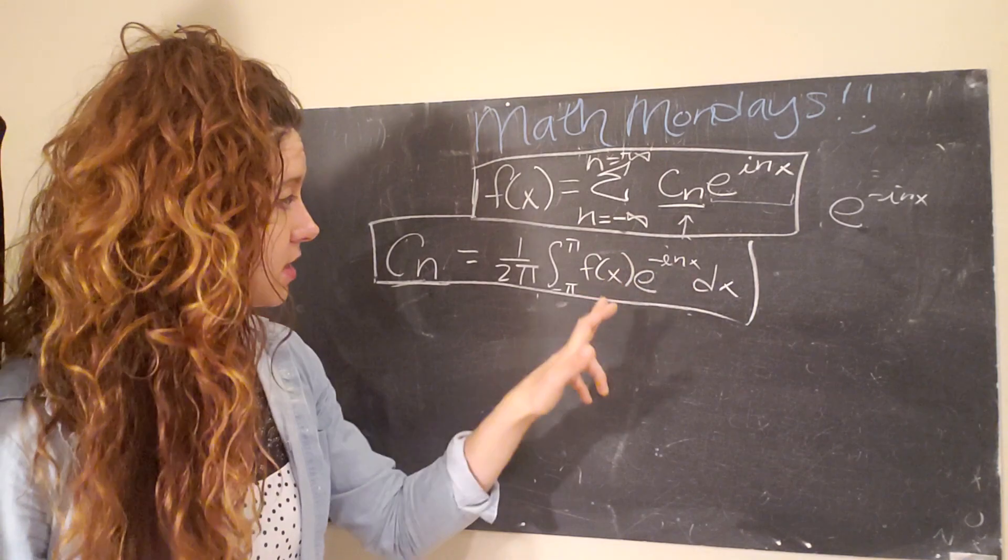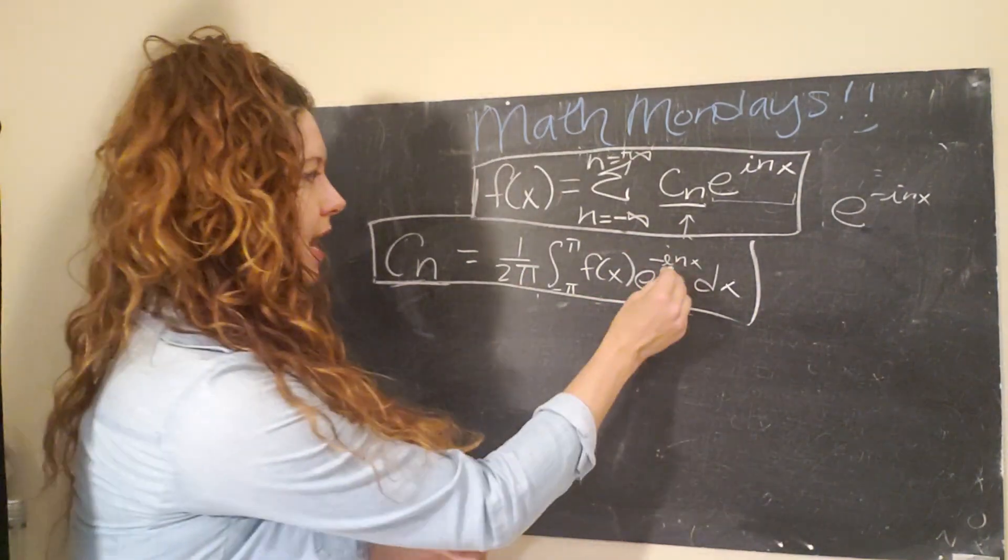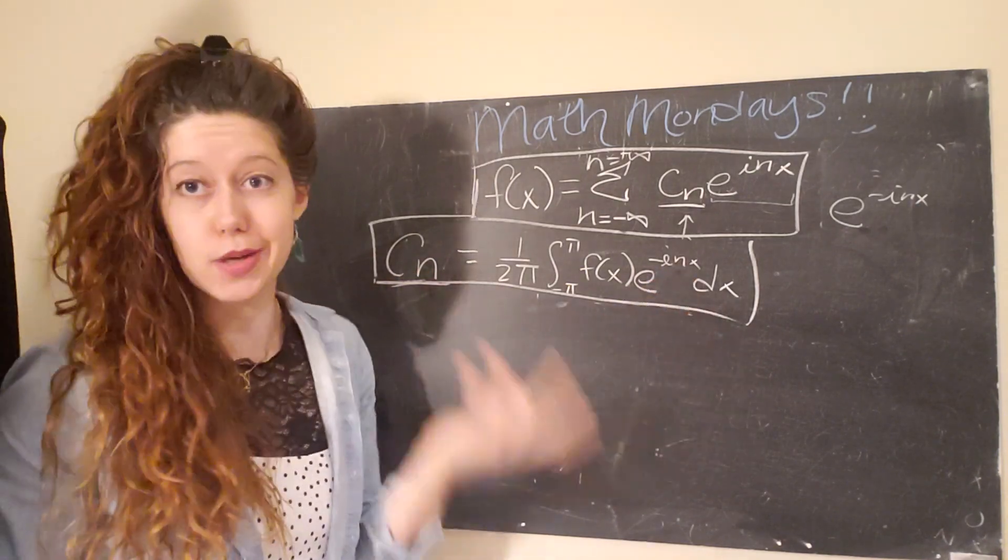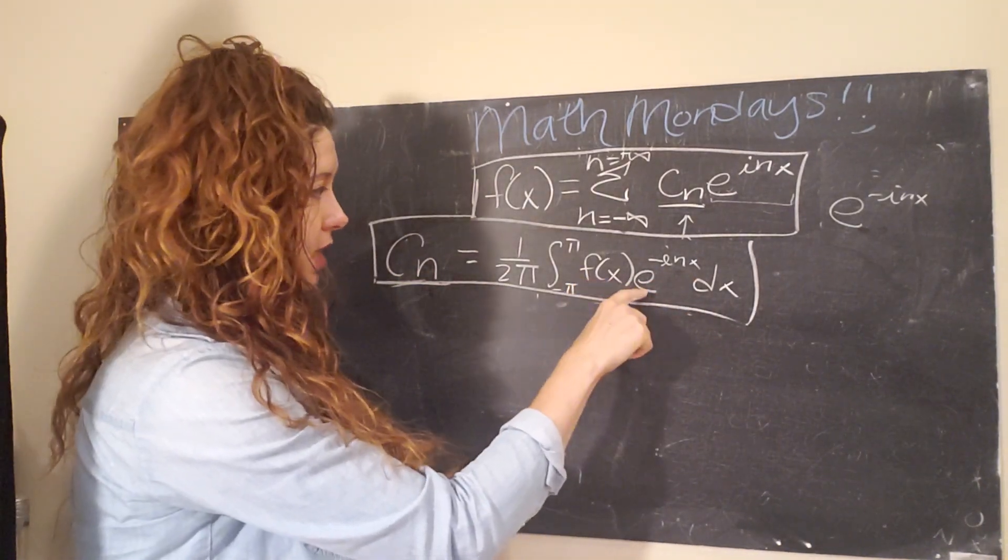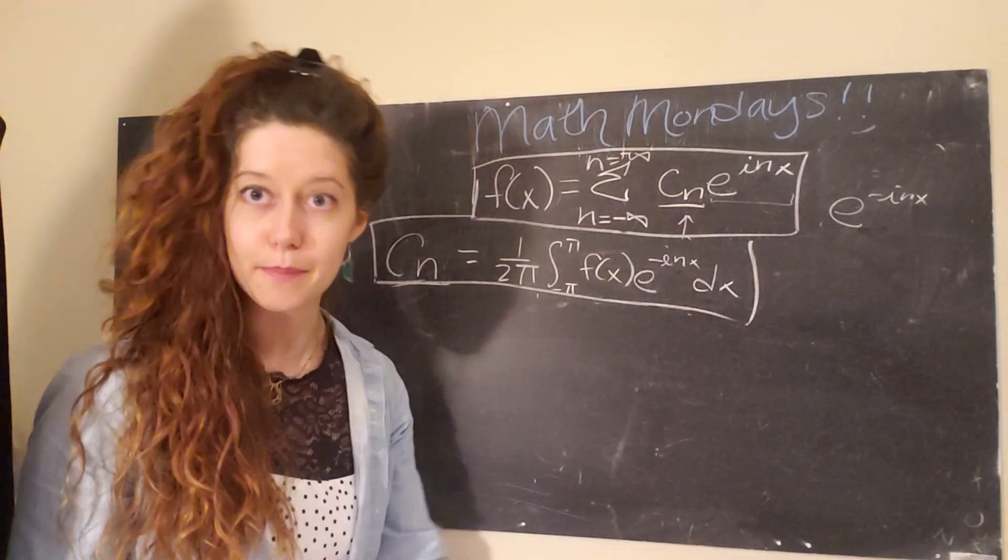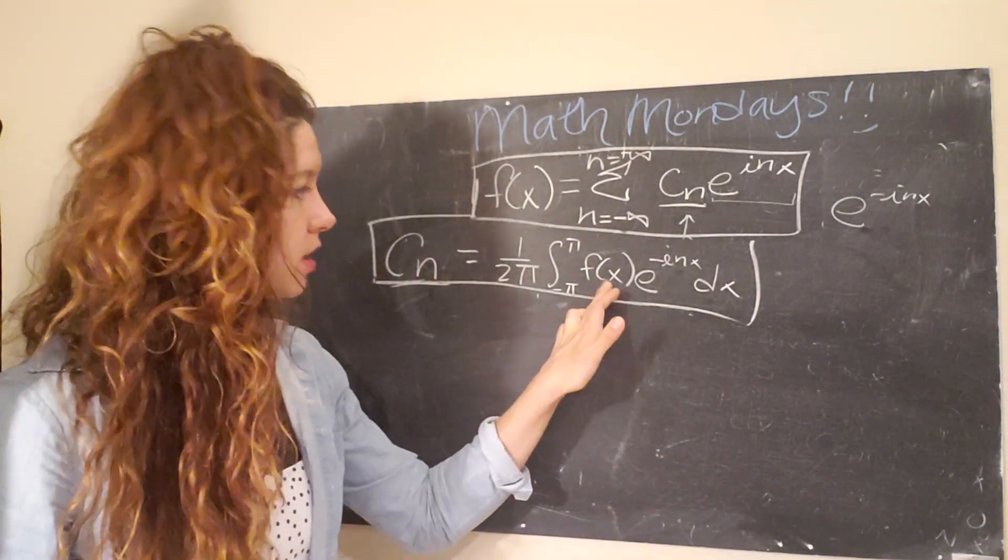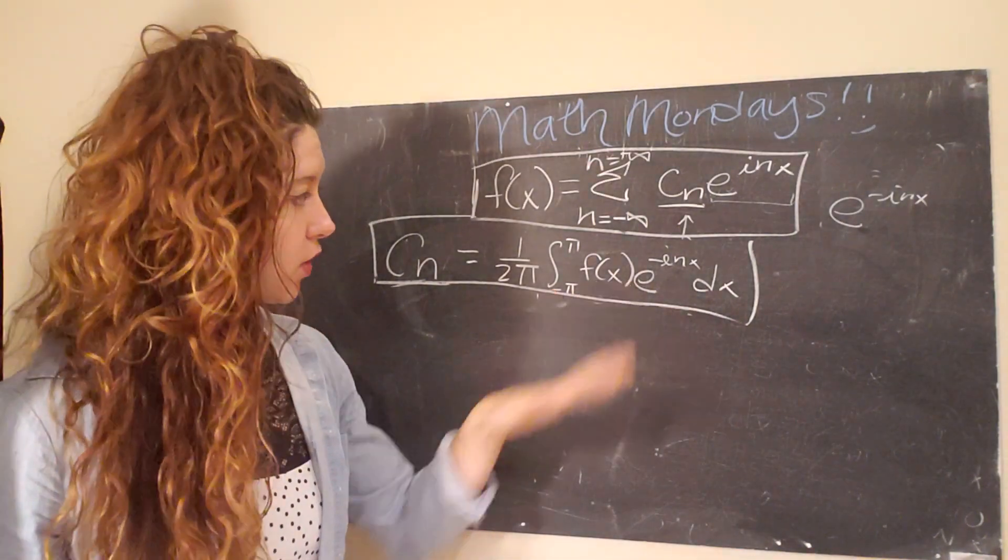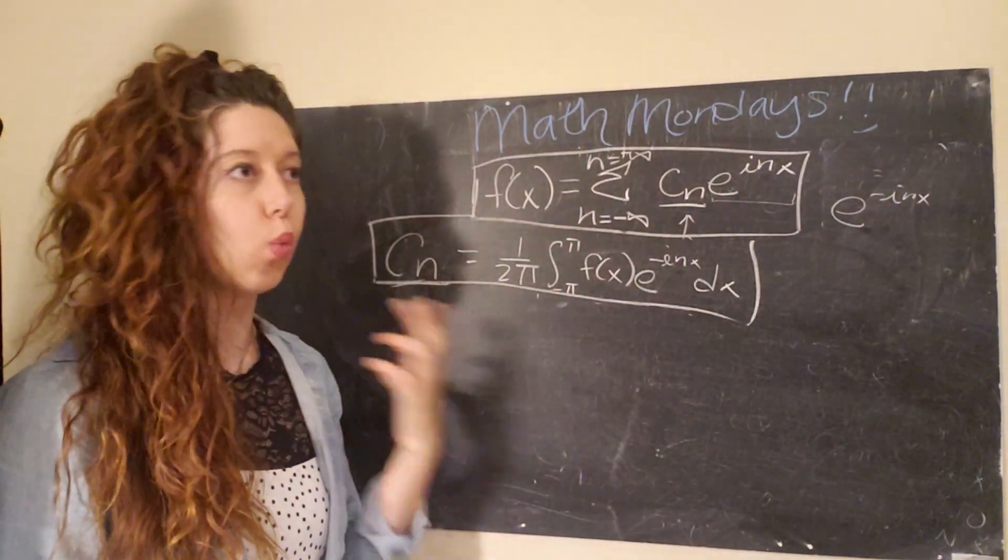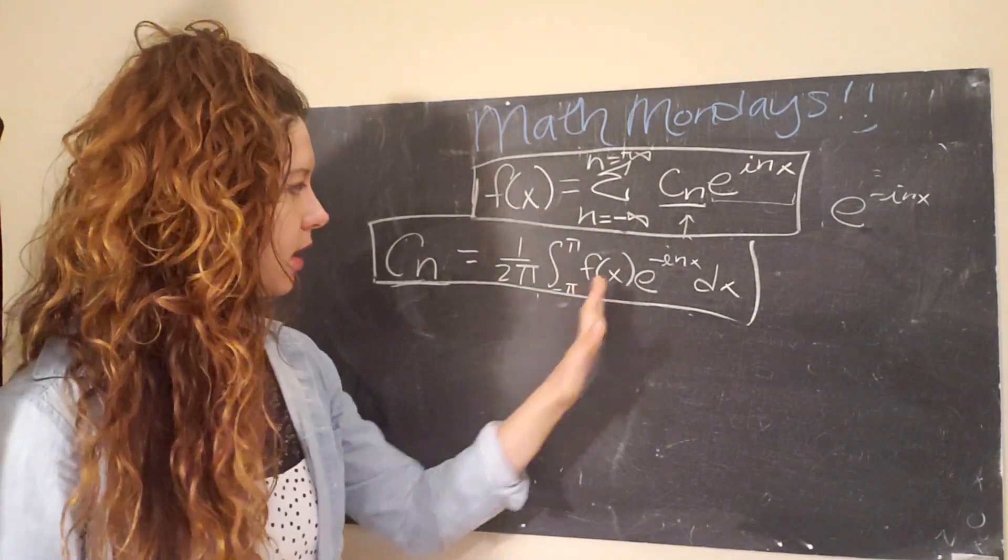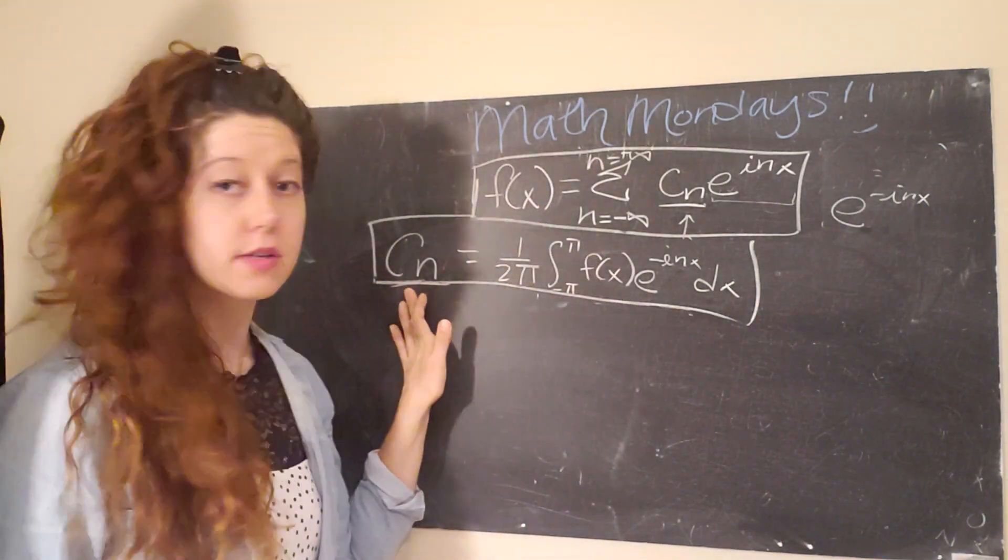Because what you'll find if you do it, and you totally should, is that when you plug in zero for n, this term just goes to one, and then you have f of x times one times dx, and you're kind of back where we just were. And again, for f of x, you would be given this function, or at least you're given a way to break it down. So this is something that you have to calculate c of n.